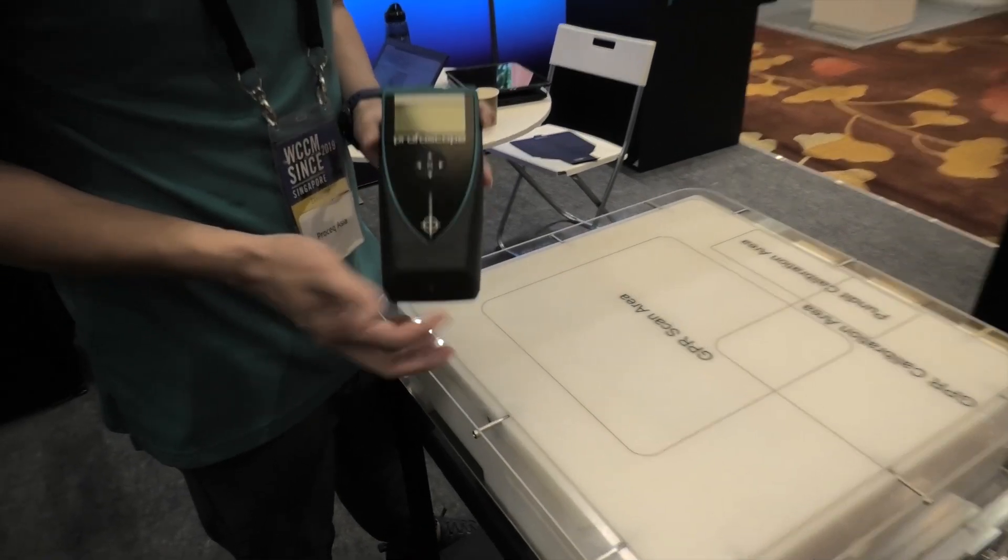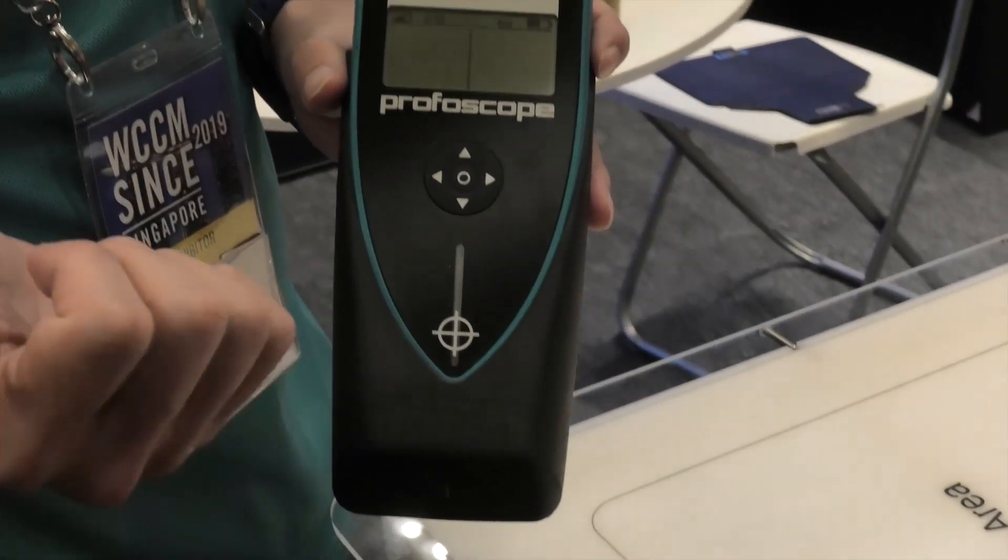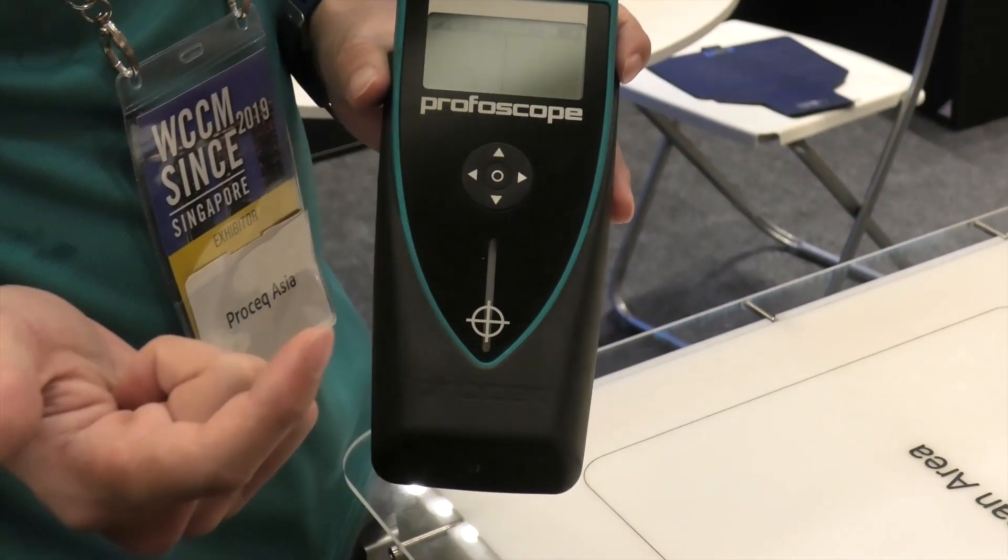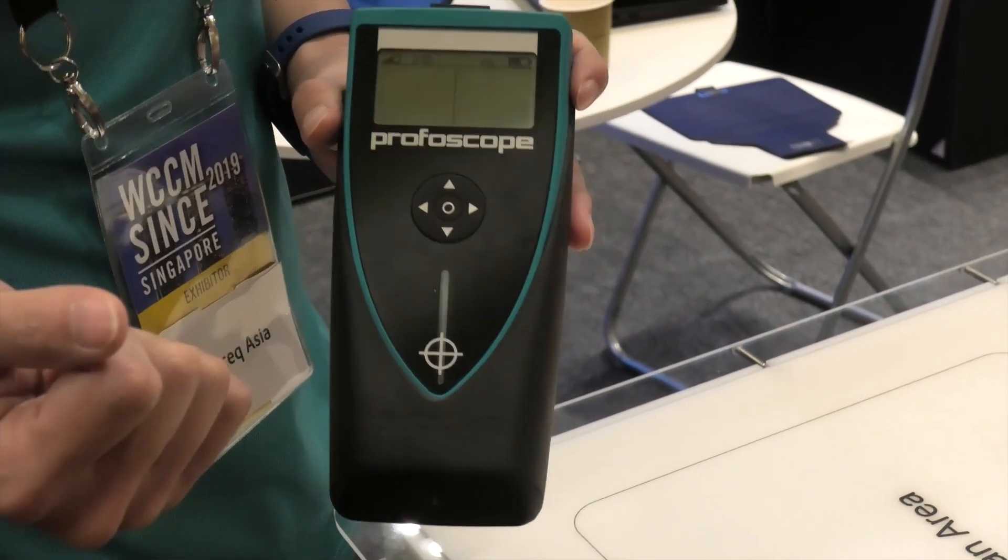This is our Profoscope. The main purpose for it is actually for rebar location, rebar diameter sizing, and also for the cover depth measurement.